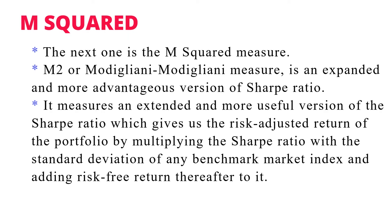The next formula is M-Squared. M-Squared, or the Modigliani and Miller measure, is an expanded and more advantageous variation of the Sharpe Ratio. It measures an expected and more useful variation of Sharpe Ratio, which gives us the risk-adjusted return of the portfolio by multiplying the Sharpe Ratio with the standard deviation of any benchmark market index and adding the risk-free rate of return thereafter.